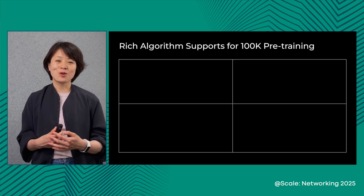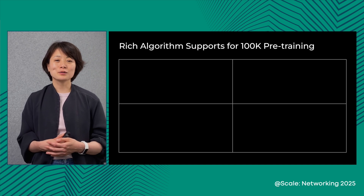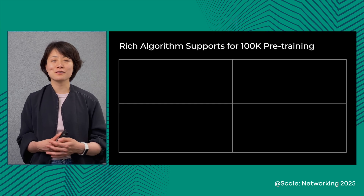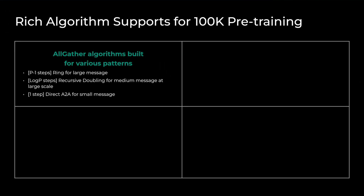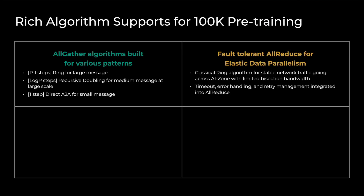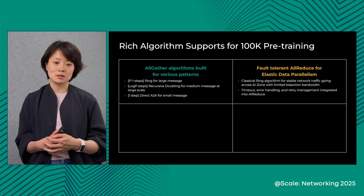Based on the core zero-copy and host-driven algorithm mechanisms, we could largely enhance our communication system to address various performance and feature requirements from LAMA 4. We enriched our algorithm selections to support medium message sizes at larger system scale — for example, the all-gather used in our fully sharded data parallel domain across AI zones. At 100K pre-training, we enabled elastic training to maintain high training throughput despite the high hardware fault ratio at such scale. As LAMA 4 strategy, we enabled this at the data parallel domain where all-reduce is performed to synchronize across replicas. As comms-side support, we enabled full fault tolerance for all-reduce, including flexible timeout, error handling, and retry mechanisms in our Sichuan stack.